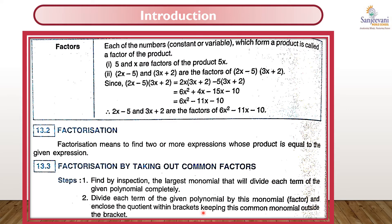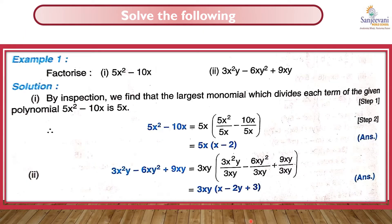Second step: divide each term of the given polynomial by this monomial. We will get a quotient within the bracket, keeping this common monomial outside the bracket.